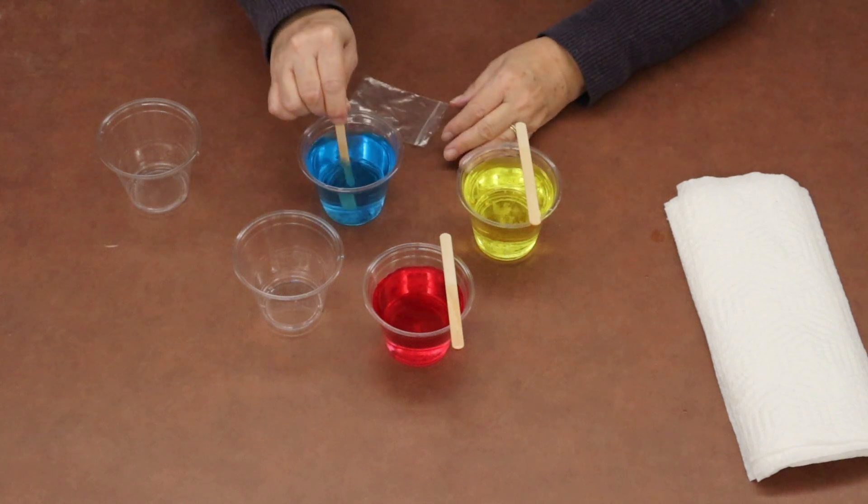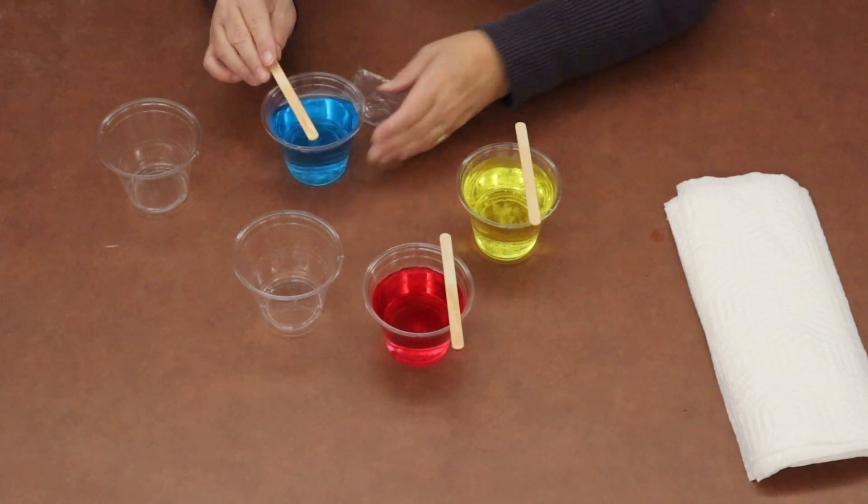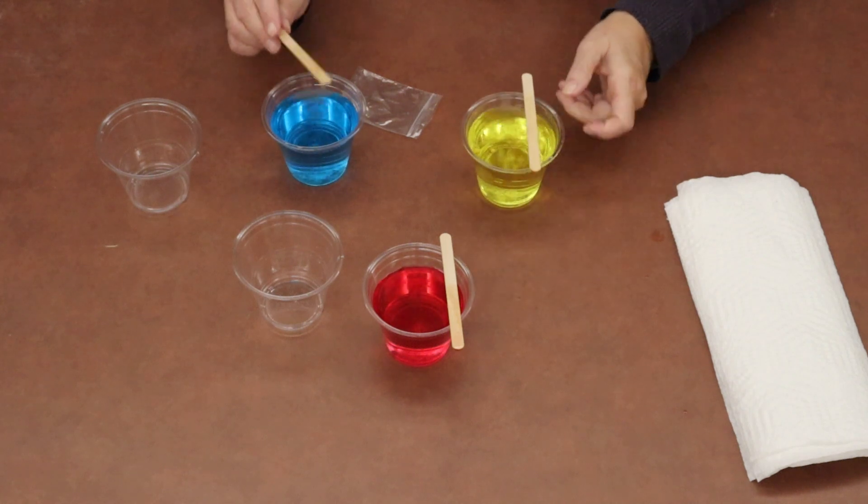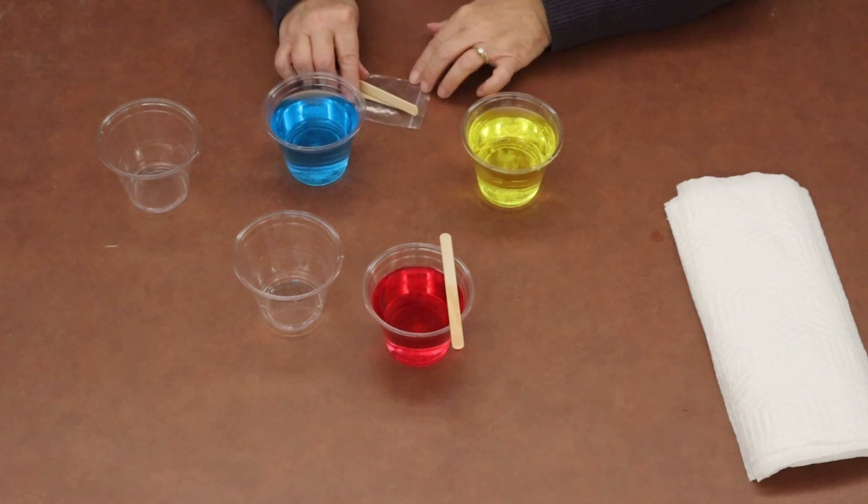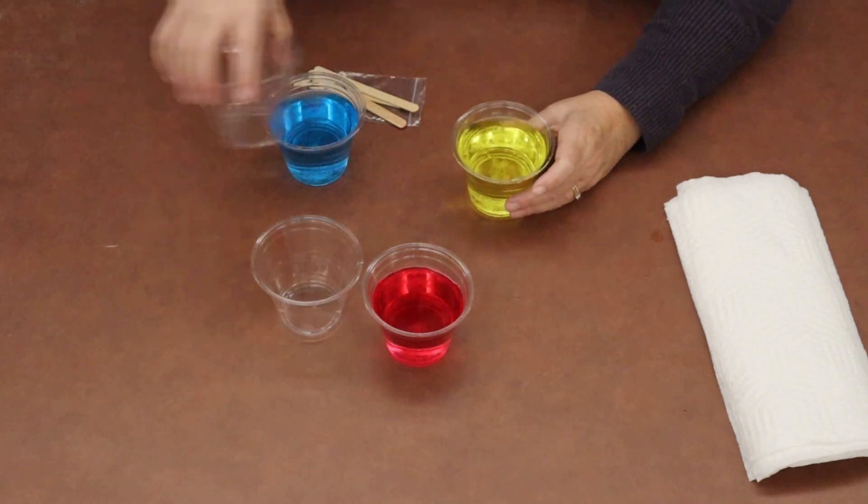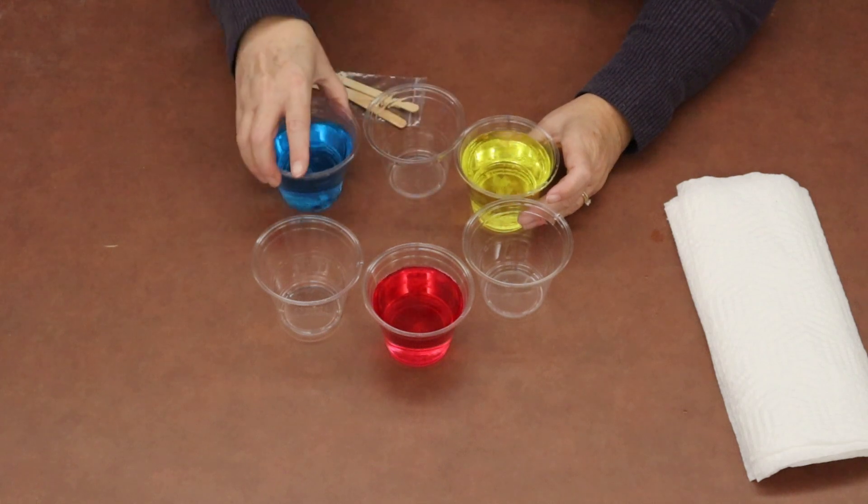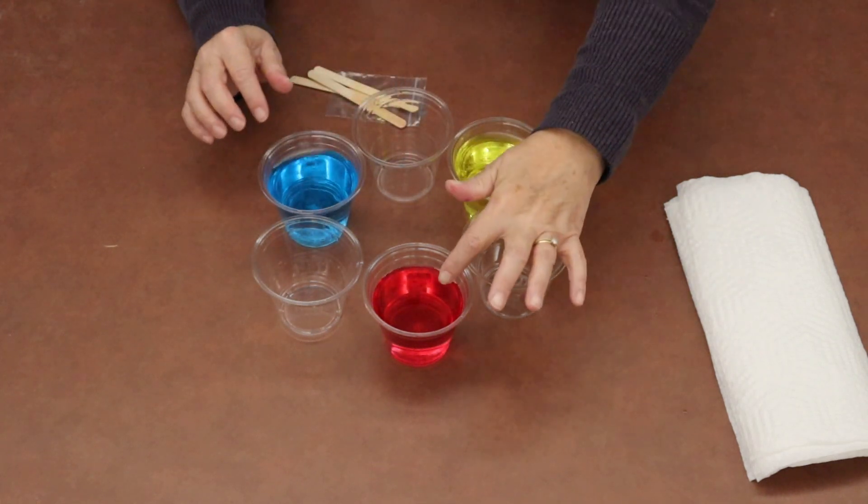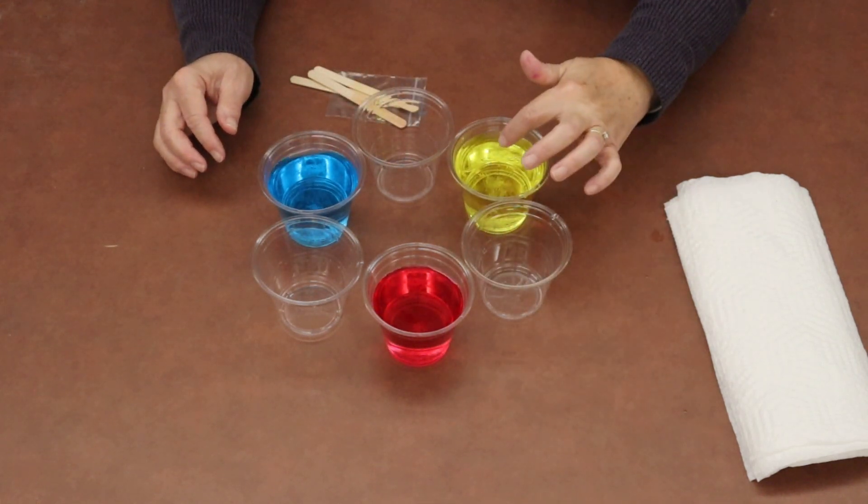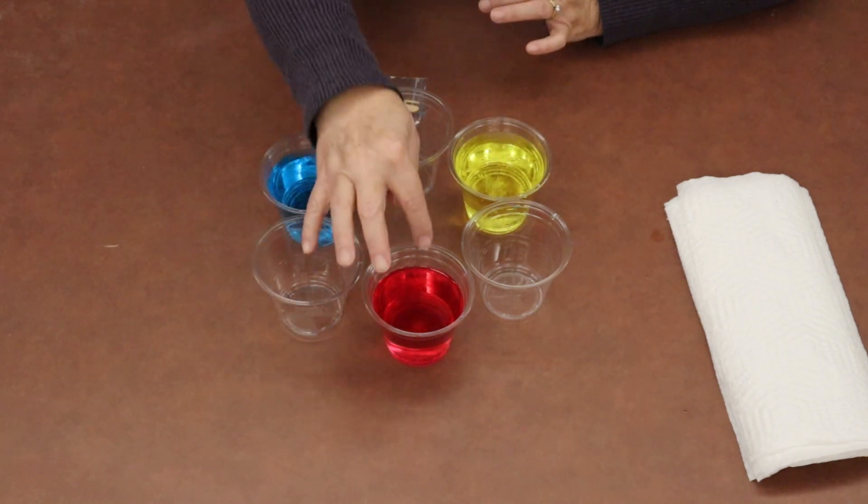So once that's done, you're going to take your three empty cups and you'll place them in between the colors. So we've got our red and an empty cup, the yellow and an empty cup, the blue and an empty cup, and then back to red.